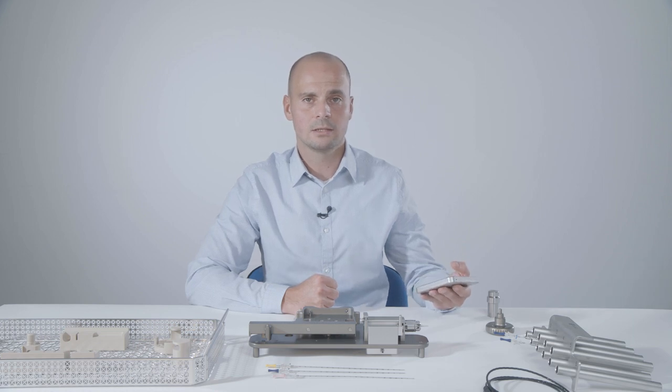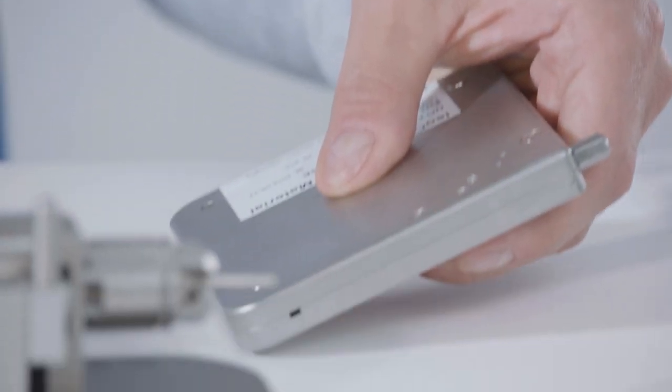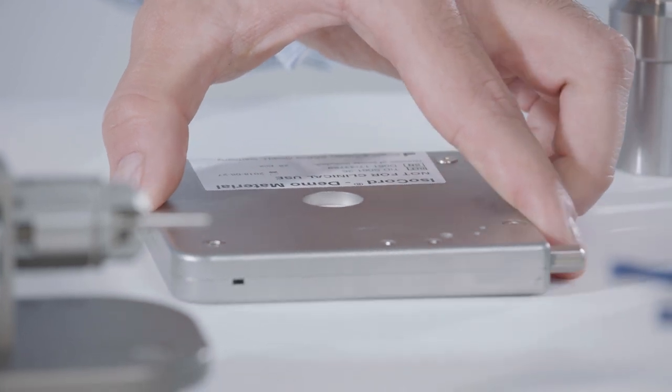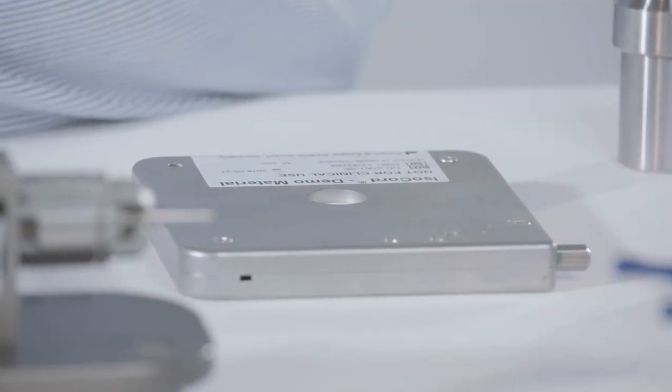The isocord magazine is fitted with a transport locking device so the seed chain cannot move unless the magazine is placed in the needle loading station.